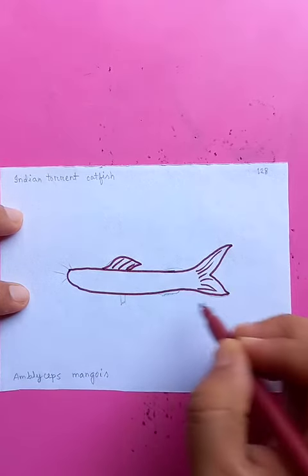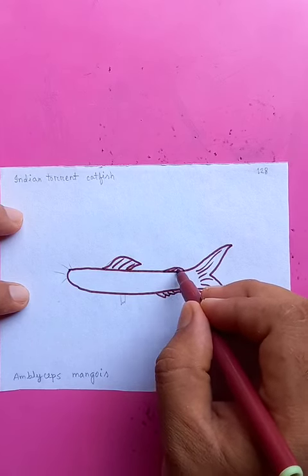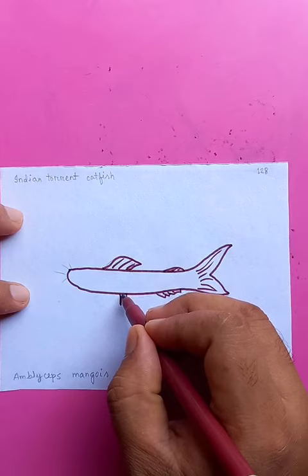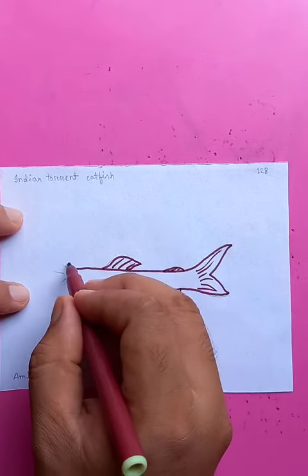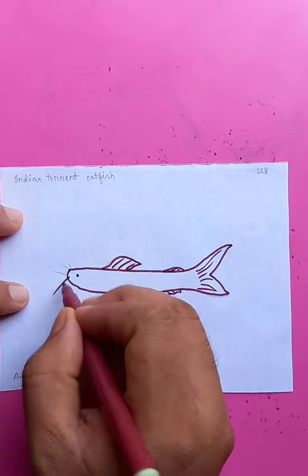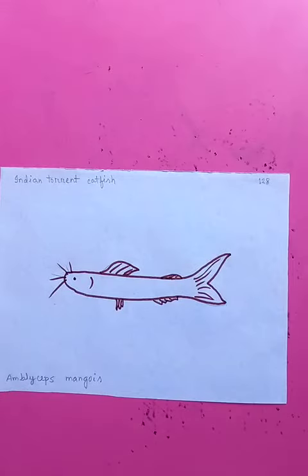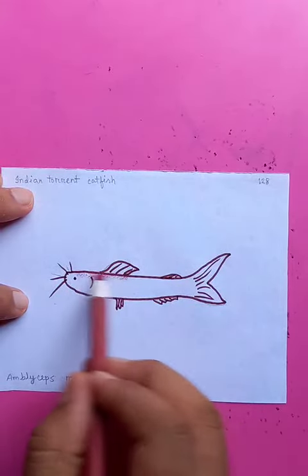You can see the smaller fins here, another one here, and another one here. This is the eye, with a few details like the cat whiskers. Going to put some color for the sketch effect.